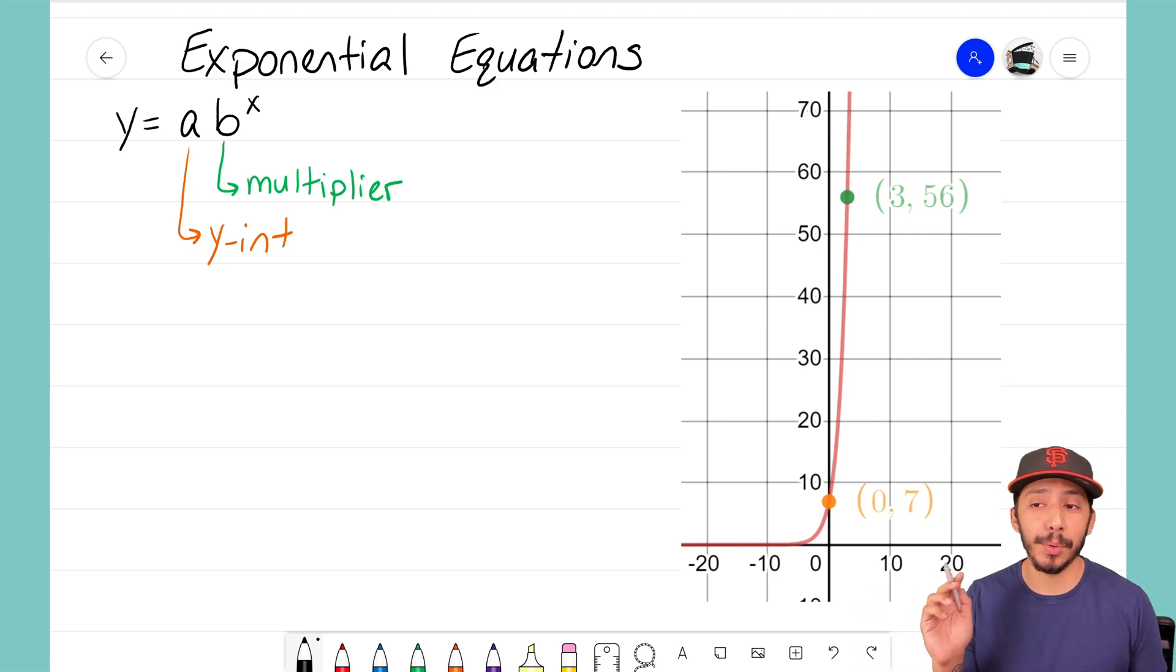Well I think the easy one to find here is going to be our y-intercept. I can see right there that our y-intercept where this red graph crosses the y-axis that is at the point (0, 7). So I know that my a value here is going to be a 7.